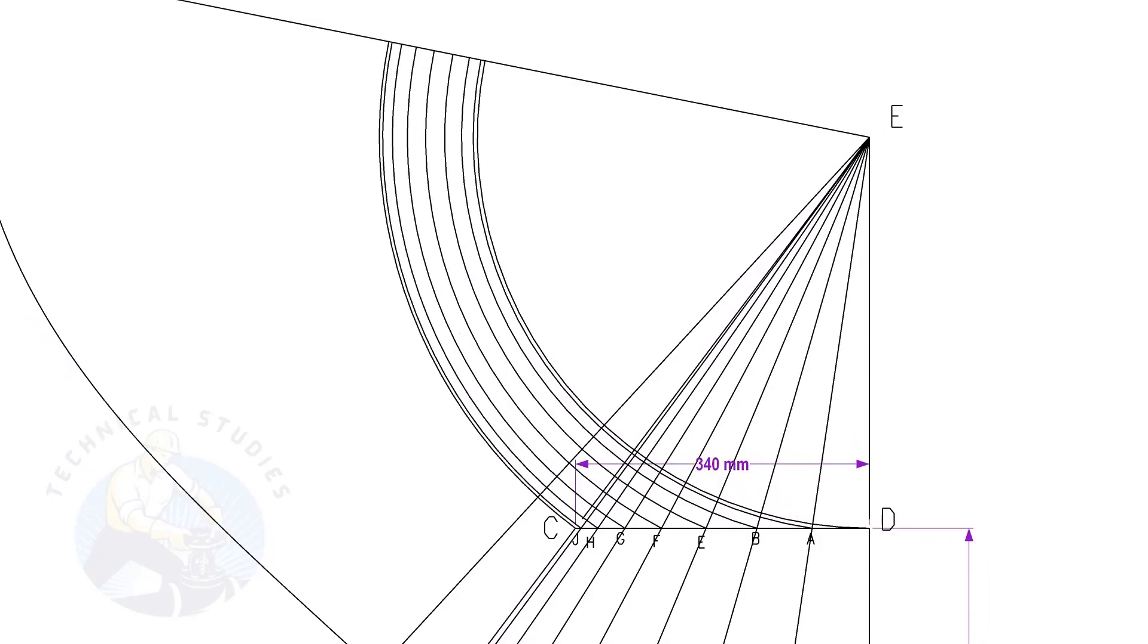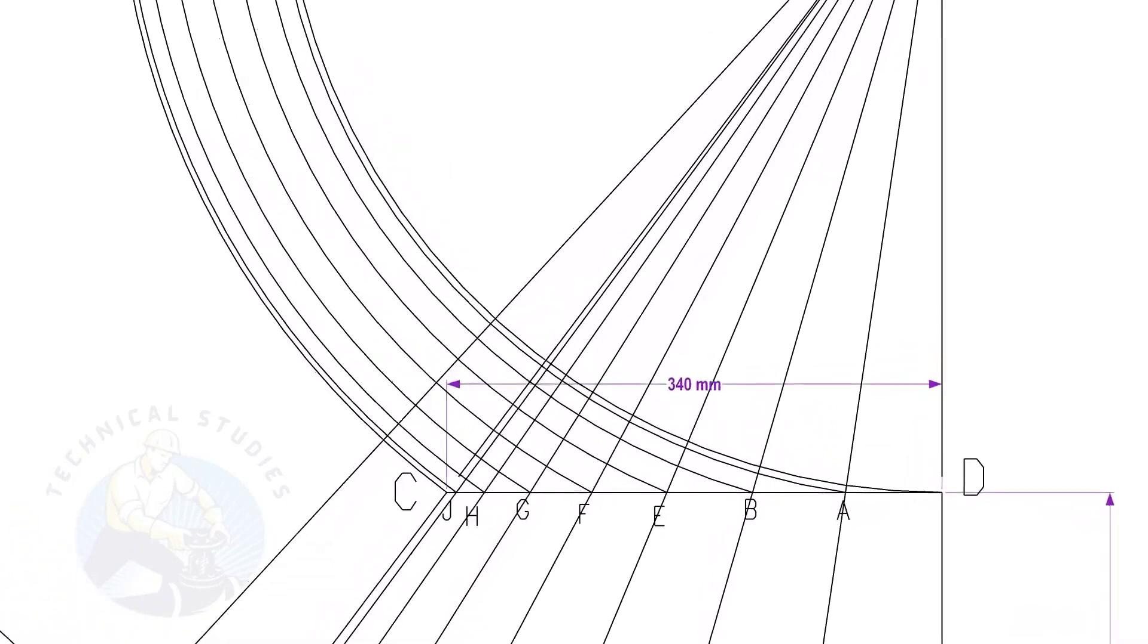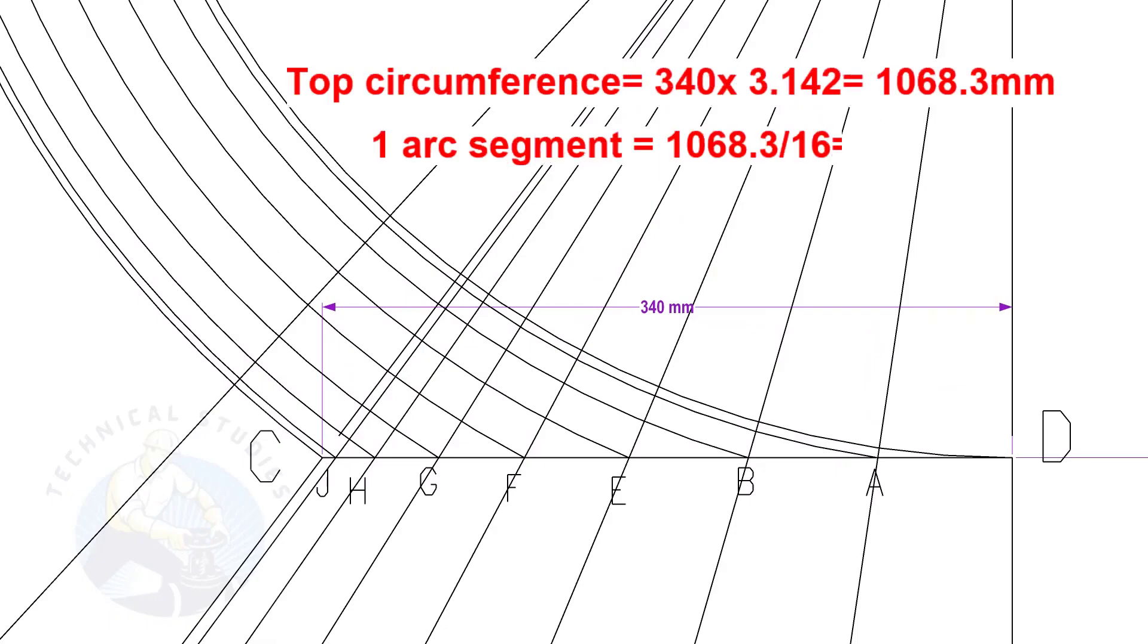To calculate the circumference of the top side and divide it by 16, top side diameter is 340 mm. The length of one arc segment is 66.77 mm.